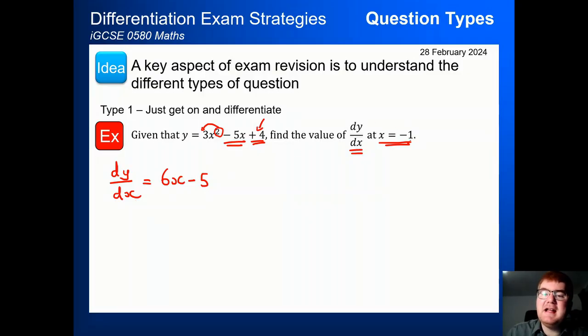Now we need to find the value at x equals minus 1. So wherever we see an x, we're going to pop in a minus 1. So we get 6 lots of minus 1 minus 5. Now a little bit of calculation here. Minus 1 times 6 is minus 6. Minus 6 minus 5, that's equal to minus 11. Don't forget those basic negative number skills are important all across the IGCSE course.